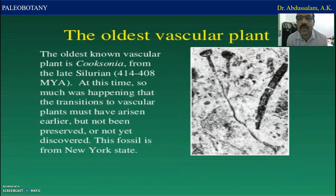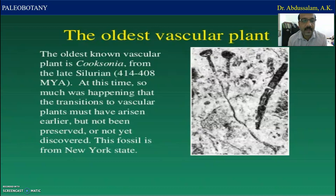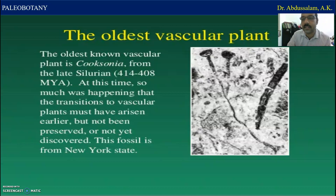What is actually the old vascular plant? The oldest known vascular plant is Cooksonia, from the late Silurian period — that is 414 to 408 million years ago. At this time so much was happening that the transition to vascular plants must have arisen earlier, but not being preserved or not yet discovered. This fossil is from New York state.